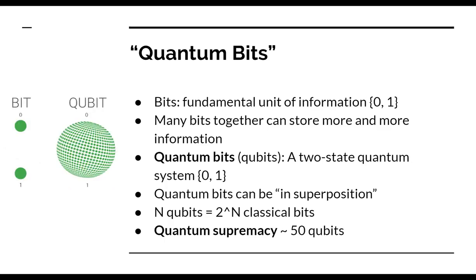Classical information is broadly described by bits. A bit is either a zero or a one — it's the fundamental unit of information. A single bit doesn't give you much information, but if you have a whole sequence — like zero, zero, one, zero, one, zero, zero, one — the more bits you have, the more information you have.